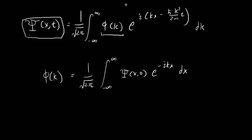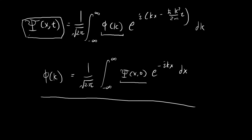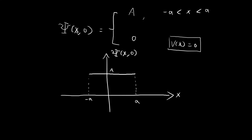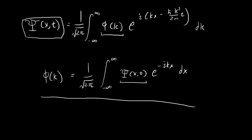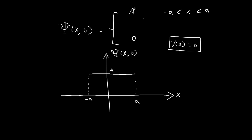Once we find the function φ(k), we can just substitute the expression in and this entire expression will be our wave function. According to this formula, our φ(k) is equal to this constant multiplied by the integral of the initial wave function multiplied by the e term. First, we need to dump the initial wave function inside this integral and integrate it. But before that, we need to find what this constant A should be, which we can find by considering normalization.